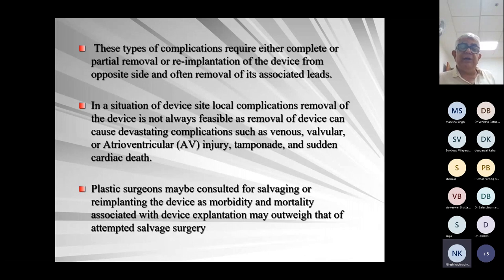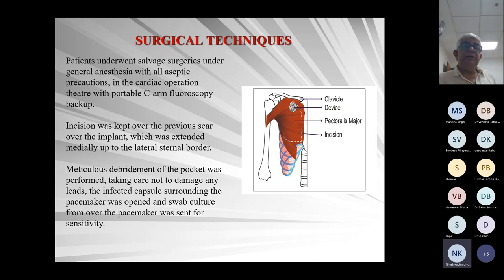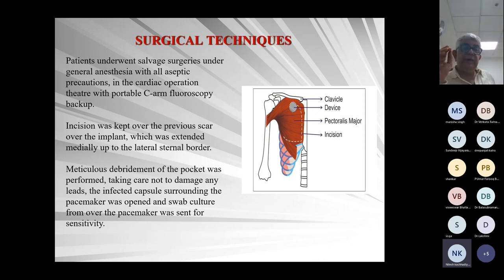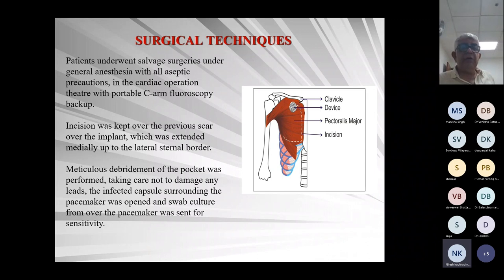Previously, most cardiologists used to remove and put the device on the opposite side, but now they have started calling me to salvage. With surgical technique, under general anesthesia with C-arm fluoroscopic backup, the incision is kept on the previous scar. All these implants have to be put on asynchronous mode when operating because using cautery can cause electromagnetic interference with the cardiac implant. The incision is extended up to the lateral corner of the sternum. The pocket is very congested with all the leads, battery, and everything — you must take care not to damage anything.